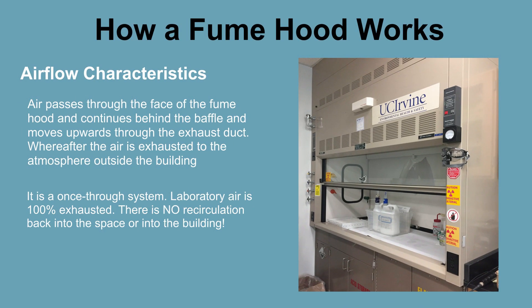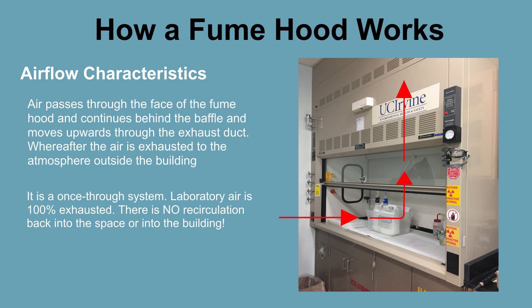So how does a fume hood work? Essentially, a vacuum is created as air is pulled away from the user. The air then passes through the face of the fume hood, sweeps over or through the contaminants, travels behind the baffles in the back of the hood, where it continues upwards and through the exhaust duct, where it is discharged to the atmosphere outside the building. It is vital to understand that this process is a once-through system, meaning all the laboratory air is always exhausted. There is no recirculation of the discharged air back into the space or the building.